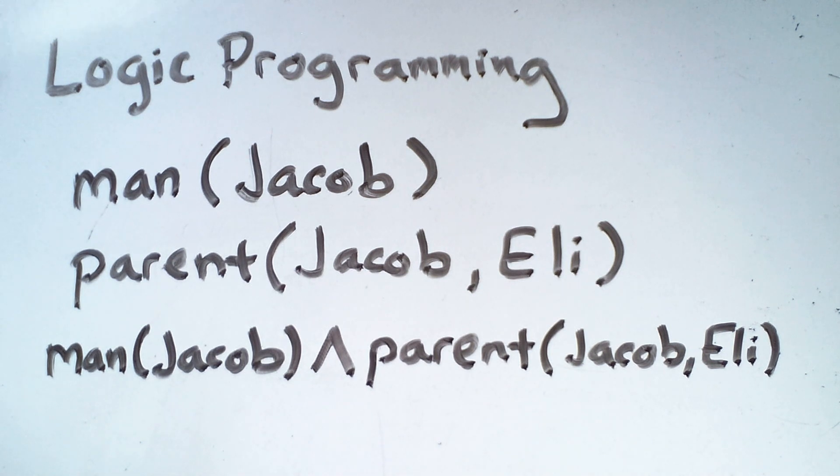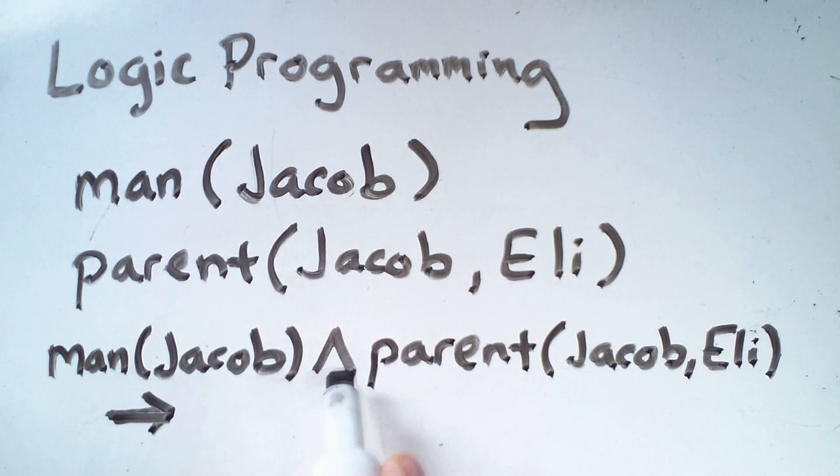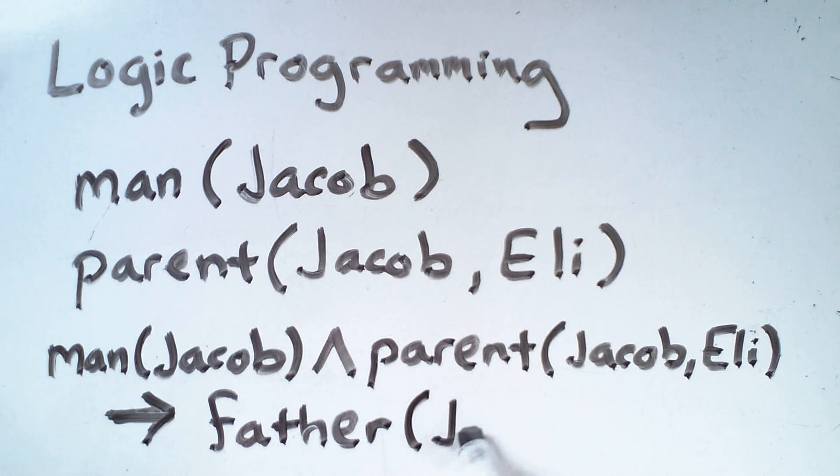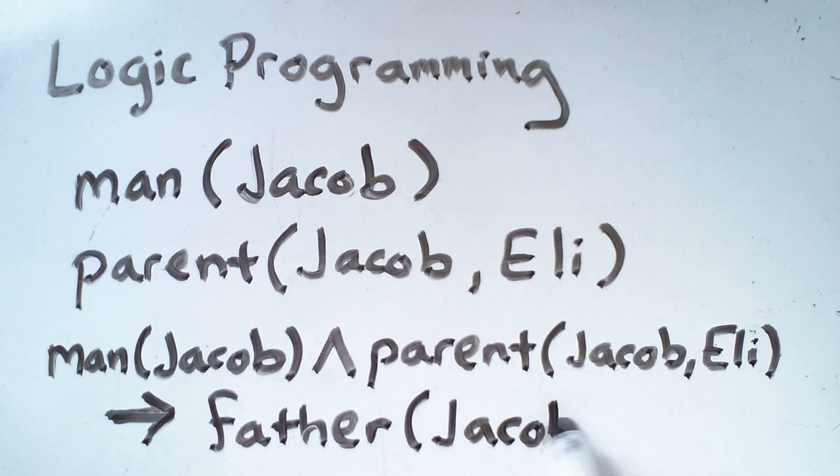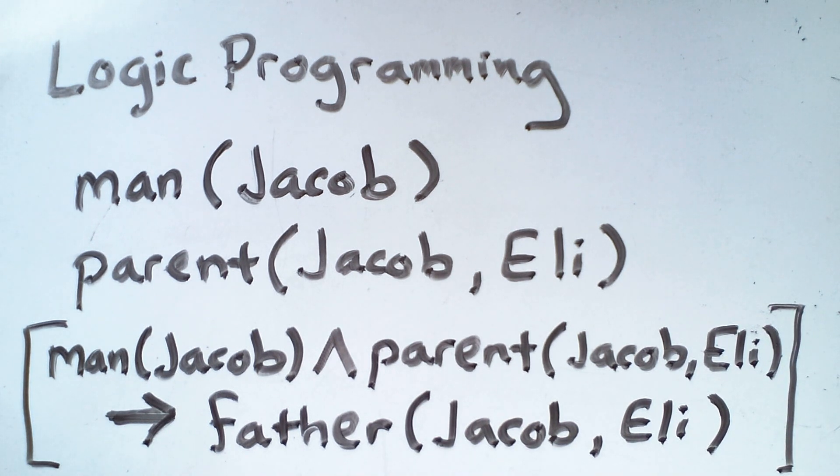These facts in combination imply, that's what this arrow symbol means. So this and this implies a new predicate, father Jacob Eli. So this is a single sentence using predicates. It's a logical statement. Jacob's a man and Jacob is a parent of Eli implies that Jacob is a father of Eli. Note that I imparted some extra meaning into these predicates by making a solid statement about what the ordering means.